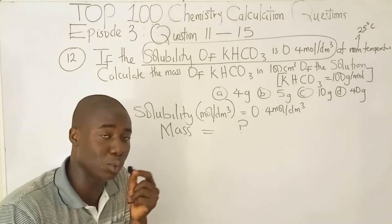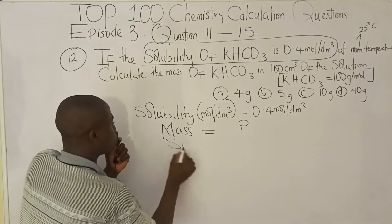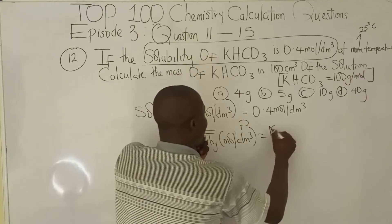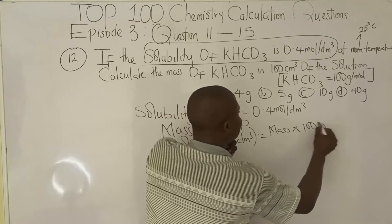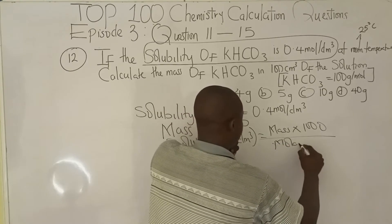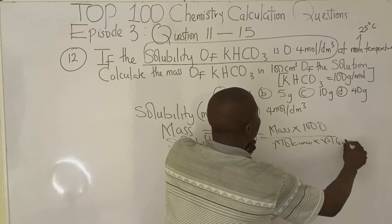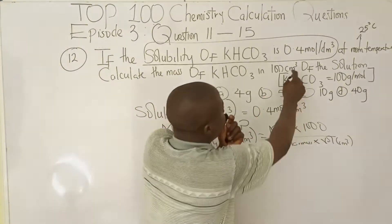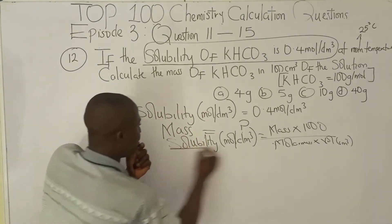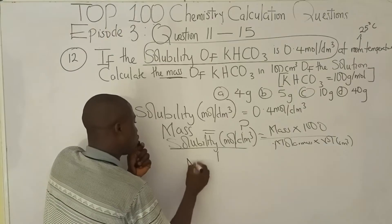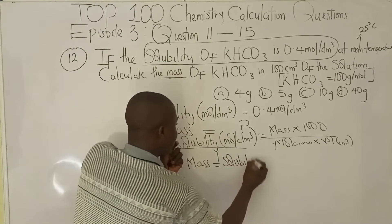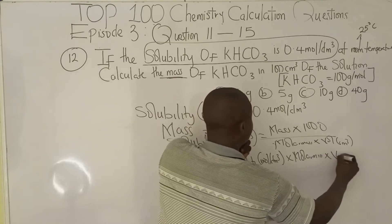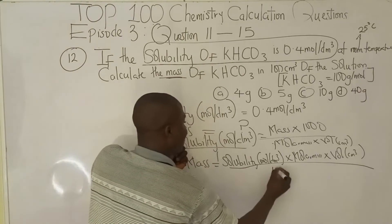We solve this using the same formula: solubility in moles per dm³ equals mass times 1000, over molar mass times volume in cm³. Since they are asking us to get mass, we make mass the subject of the formula. It becomes: mass equals solubility in moles per dm³, times molar mass, times volume in cm³, over 1000.